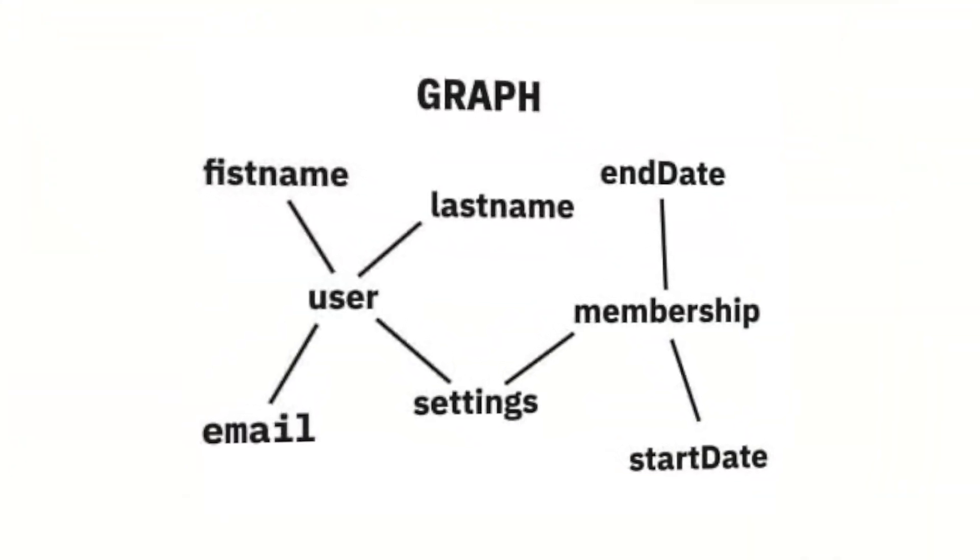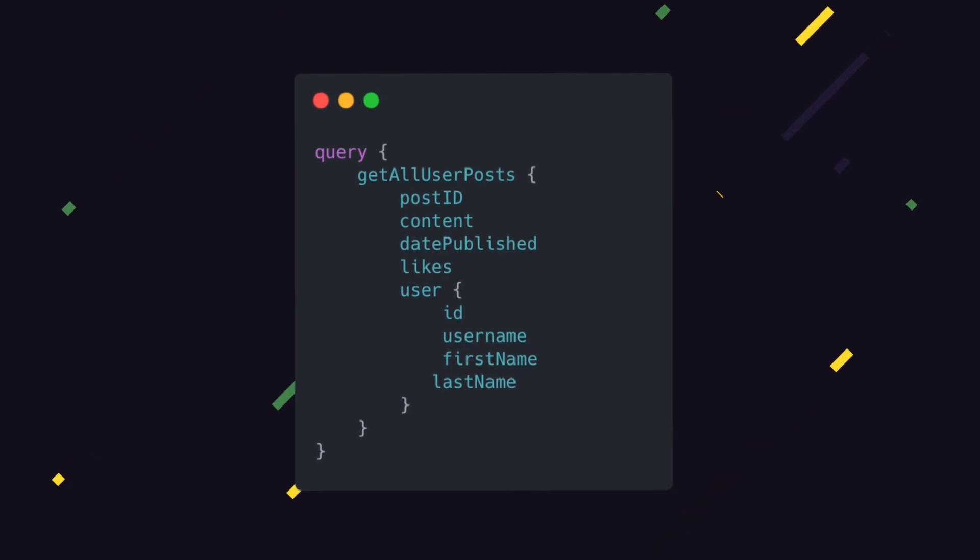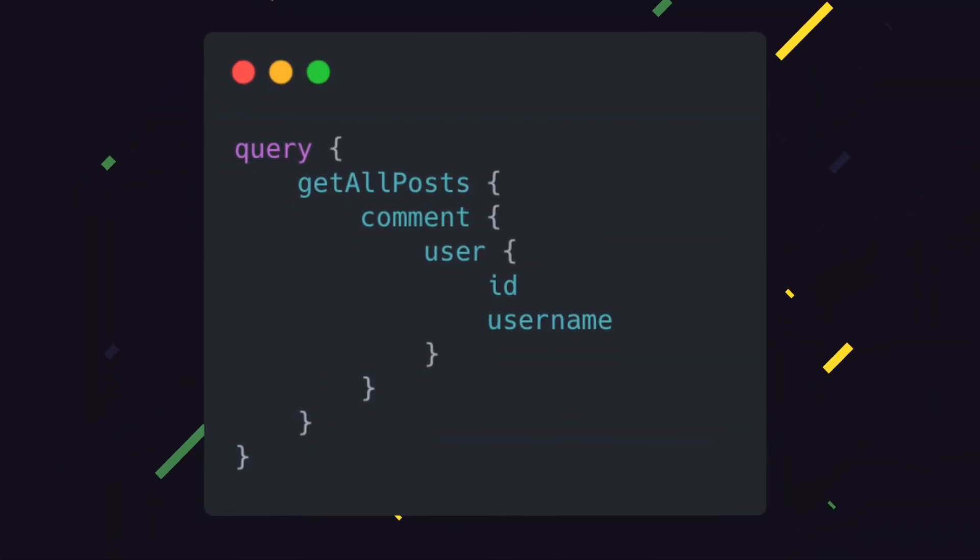Another specific thing about GraphQL is that all the data is composed as a graph with multiple relationships. For example, a post can have a user — you define this relationship, and when you query a post with the user who created it, you can do that by specifying it inside your query. This can be nested very deep: on a homepage you might query posts with comments, and for every comment also query the data about the user that posted that comment. All of this can be inside the same query.